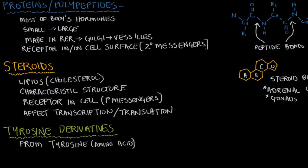One example of tyrosine derivatives are the hormones from the thyroid gland — T3 and T4, or triiodothyronine and thyroxine — which stimulate metabolism. These tyrosine derivatives act very similarly to steroids.